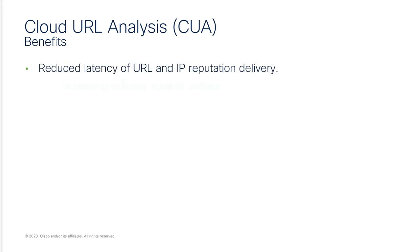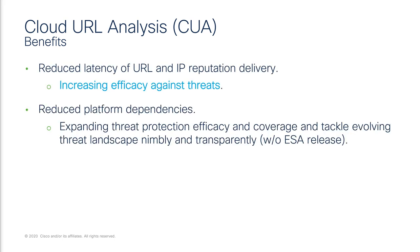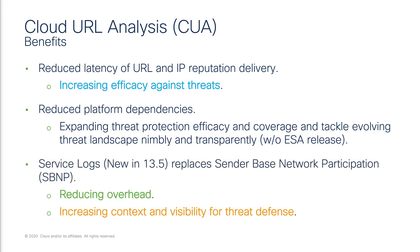Cloud URL analysis provides reduced latency with URL detections and results. It also focuses to reduce platform dependency and administration overhead. And finally, Kua is designed to aggregate global ESA service logs, helping to build and deliver a robust method of stopping malicious URLs.